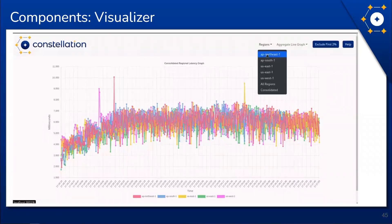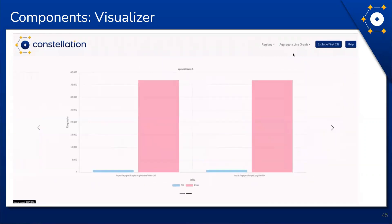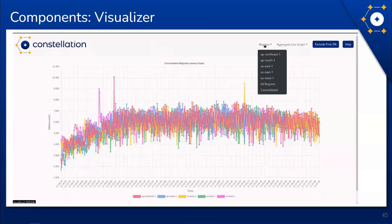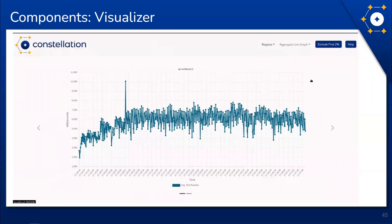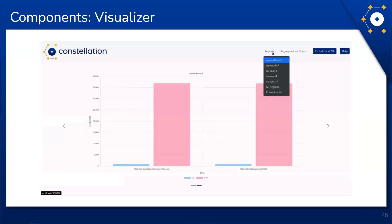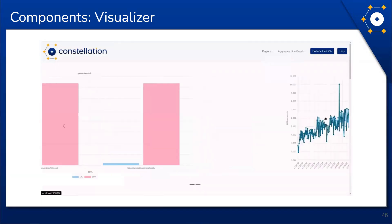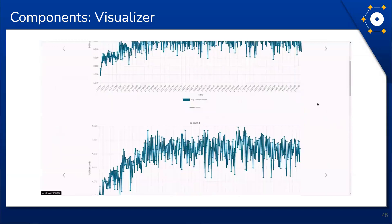The visualizer app also allows the user to see only one region at a time by selecting which region to view using the dropdown. The user can also see the ratio of success to errors in an easy-to-read bar graph next to the regional test latency graph. Finally, you can also choose to see the graphs for individual regions all in one place with the 'all' option in the regions dropdown.